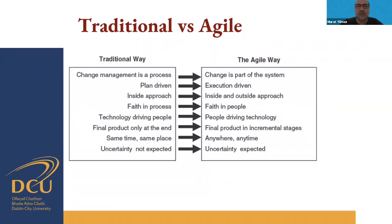In agile, at every stage you have a part of an artifact which needs to be executable, so the customer can see progress. Traditional work is usually planned in the same time and place, possibly large offices. In agile it can be anywhere, anytime. In the traditional way uncertainty is not expected — you trust your requirements very strongly. In agile, you start by acknowledging that uncertainty is inevitable and you must deal with it.